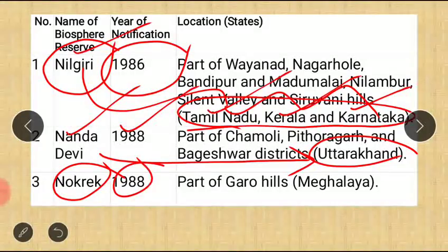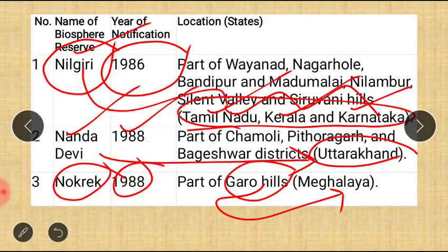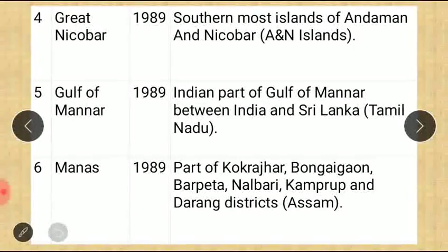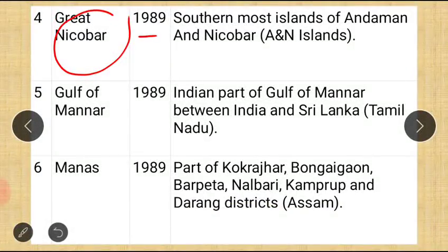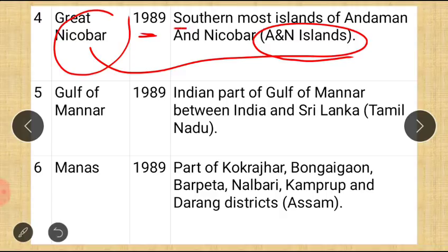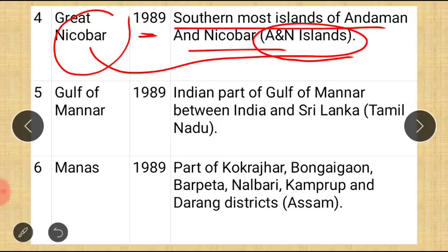The fourth Biosphere Reserve is Great Nicobar, 1989, located on the southernmost island of the Andaman and Nicobar Islands in the Bay of Bengal. This is unique because it is an island-based biosphere reserve. The fifth is Gulf of Mannar, 1989, covering the Indian part of the Gulf of Mannar — the Gulf lies between India and Sri Lanka, and the closest Indian state to Sri Lanka is Tamil Nadu, so Gulf of Mannar is in Tamil Nadu.